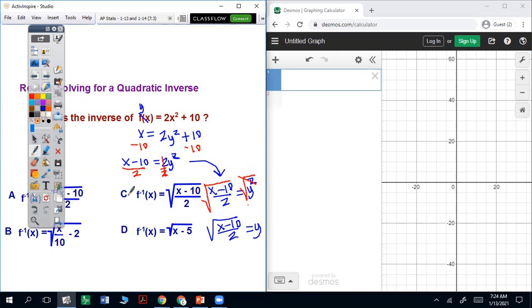And that's going to be C. And we can check that in Desmos as well.